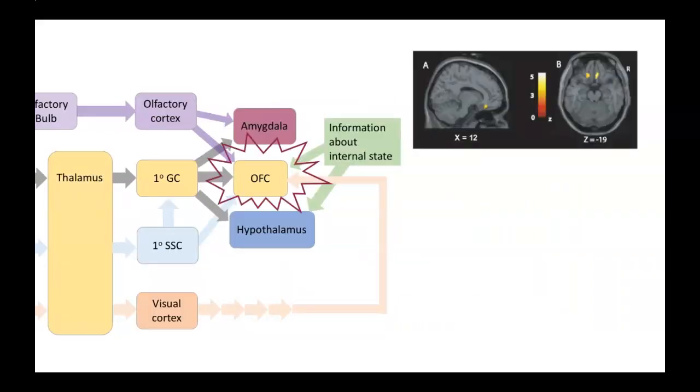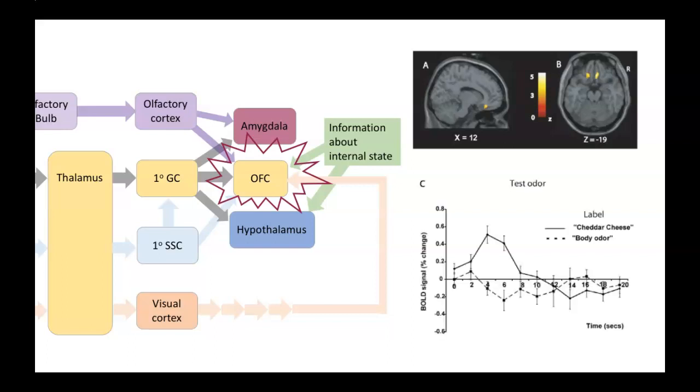In this study the researchers quantified the activity in the orbital frontal cortex in response to an odor when it was paired with either the word cheddar cheese or body odor. The images show the results. There's much higher activity, more yellow, when the stimulus is paired with cheddar cheese than with the words body odor.